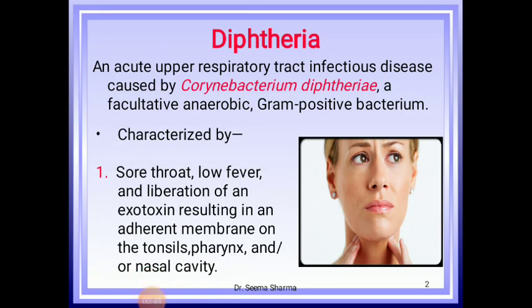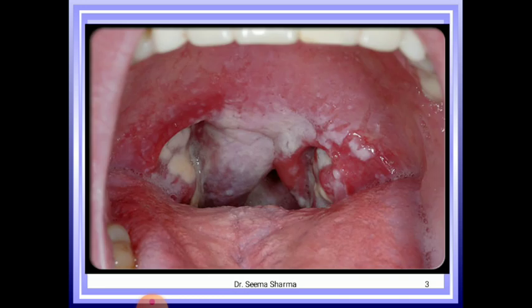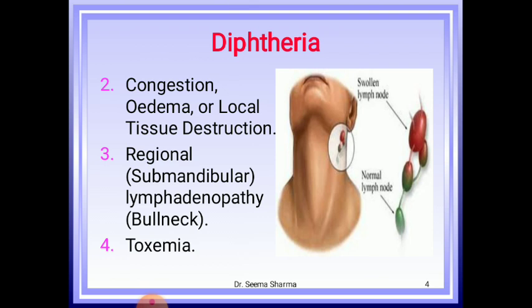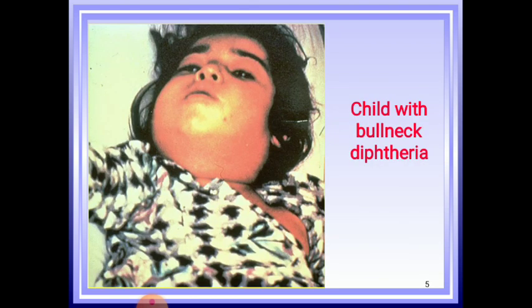The disease is characterized by sore throat, low fever, and liberation of an exotoxin resulting in an adherent membrane on tonsil, pharynx, and nasal cavity. This picture shows the pseudomembrane — a white color membrane over the pharyngeal area and tonsils. Diphtheria is also characterized by congestion, edema or local tissue destruction, regional submandibular lymphadenopathy that looks like bull neck appearance, and toxemia. The picture shows a child with bull neck diphtheria.